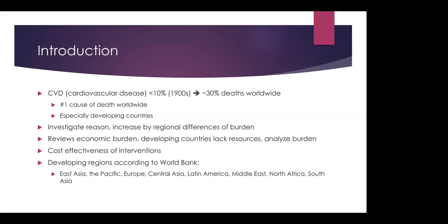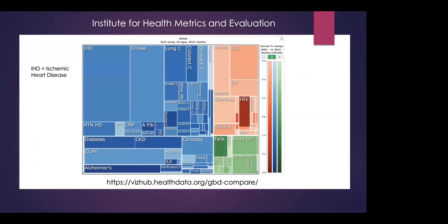For reference, the developing regions discussed will be East Asia, the Pacific, Europe, Central Asia, Latin America, Middle East, North Africa, and South Asia. This is the IHME global burden of disease visual tool. This diagram is set to deaths and basically shows what conditions are most impactful. Ischemic heart disease or CVD is the most influential by quite a wide margin.